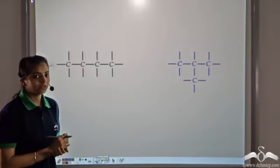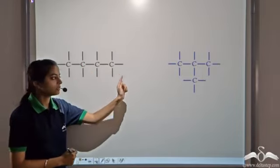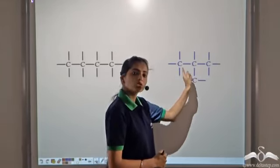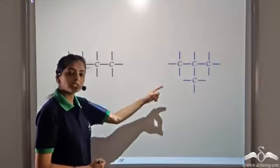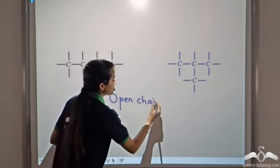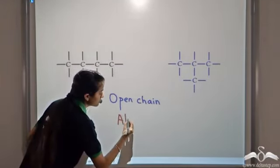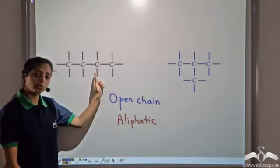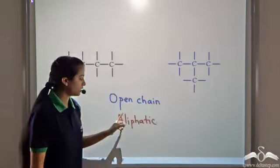Carbon can link itself in many ways. It links itself by forming chains — in this case, carbon links to itself by forming a straight chain, and in this case by forming a branched chain, where one carbon is joined to another forming a branch. Such straight chain or branched chain structures are known as open chain structures, or aliphatic compounds. The organic compounds in which carbon atoms are linked by forming straight chains or branched chains are known as open chain compounds or aliphatic compounds.